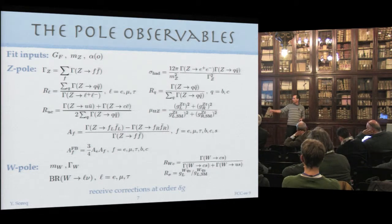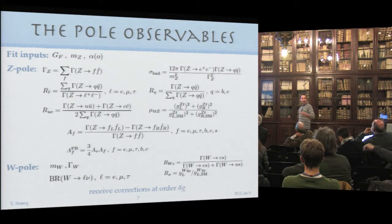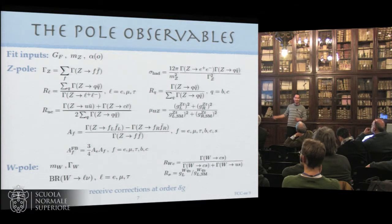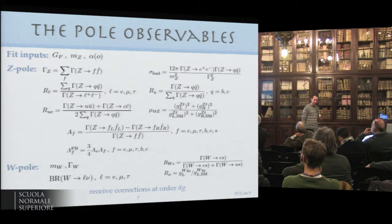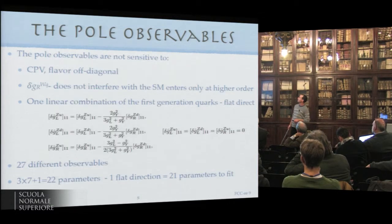In the W pole observables, we have the branching ratio for leptons, the mass and width, and the ratio of W to charm and strange over U and D. And on the third generation, the couplings to tops. These observables receive corrections at linear order in delta G, which is the leading order.